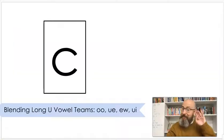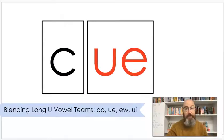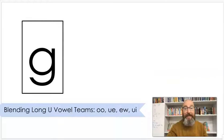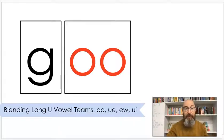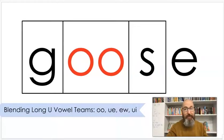Sound: K. Sound: U. Put those together — Q. A Q would be a hint. Sound: G. Sound: U. Put those together — goose. And a goose is a bird; it likes to live on the water.